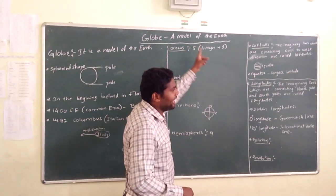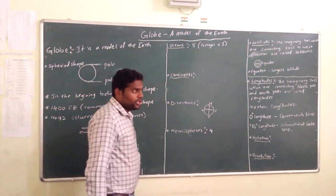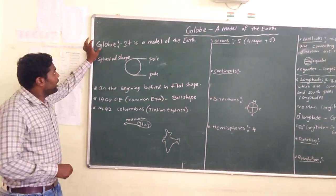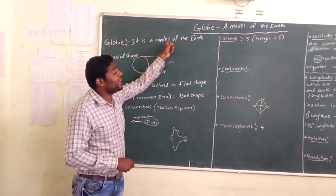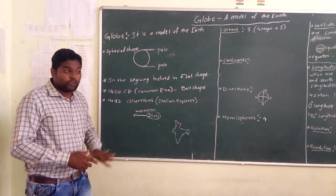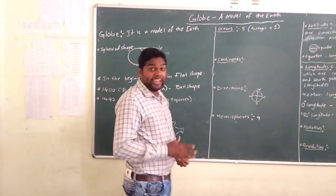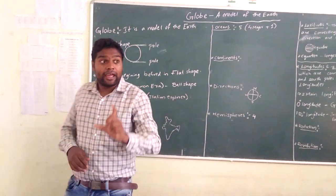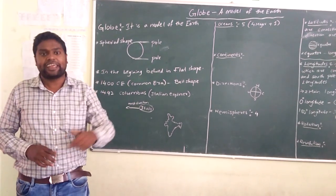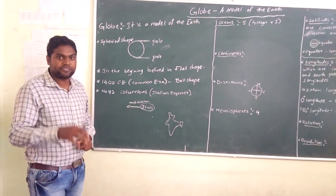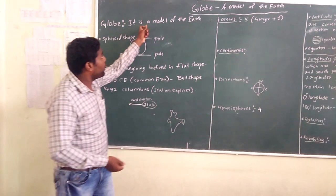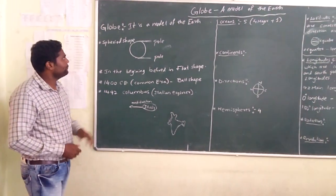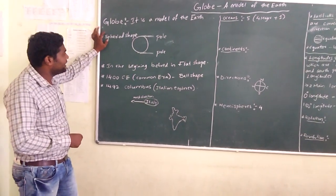The lesson is: Globe — a model of the earth. So actually what is meant by globe? When we are able to see the globe, it is appearing or looking like the model of the shape of the earth. Simply in our words, we call it a model of the earth.